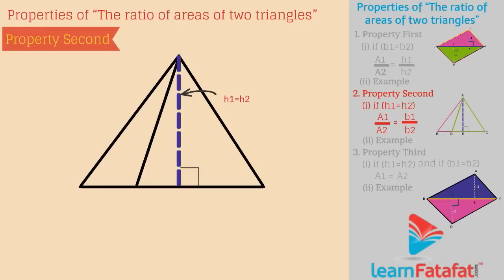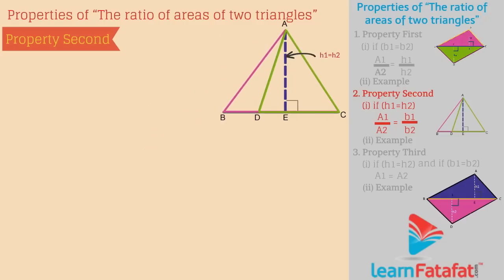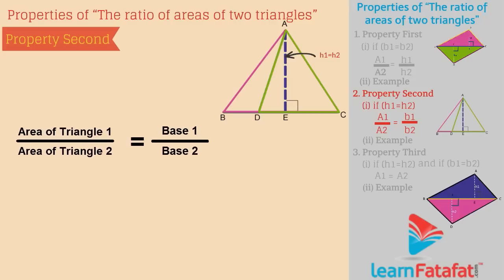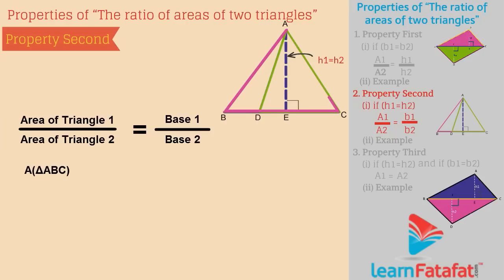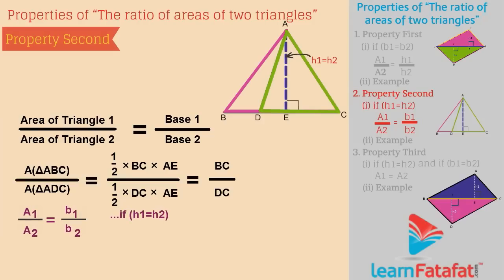Consider the triangles as shown in the figure. Triangle ABC and triangle ADC have a common height, that is AE. If we take the ratio of areas of these two triangles, it is equal to the ratio of bases of the two triangles. Area of triangle ABC divided by area of triangle ADC is equal to half into BC into AE, divided by half into DC into AE, which is equal to BC divided by DC. That is, A1 divided by A2 is equal to B1 divided by B2, if H1 is equal to H2.